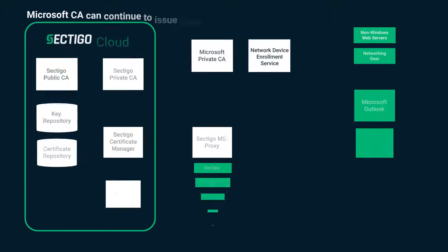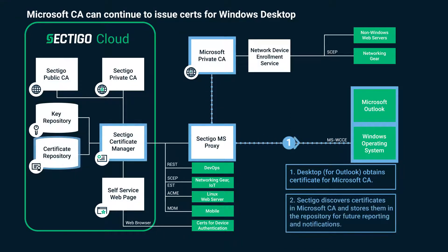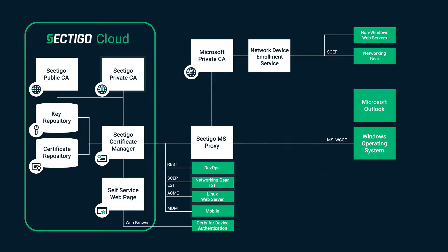When an application running on a Windows operating system requests a certificate, it can be provided by the Microsoft CA using standard Windows auto-enrollment. Certificate Manager will be aware of the certificate, allowing for reporting and compliance checking.